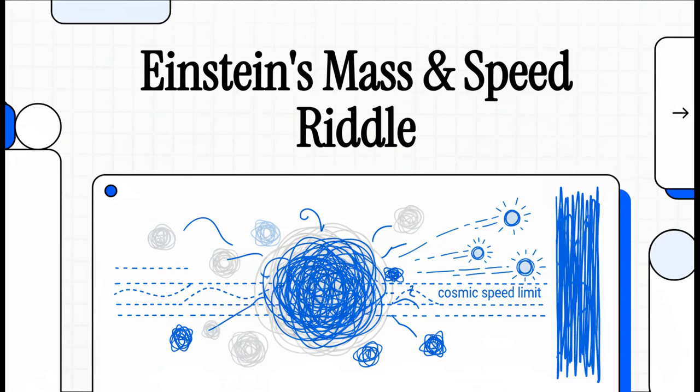We're going to unravel one of the most famous, and maybe one of the most misunderstood, ideas in all of science. You've seen the equation a million times, E equals mc squared. But what does it really mean? Well, that's a whole lot stranger and way more incredible than you've probably ever been told.